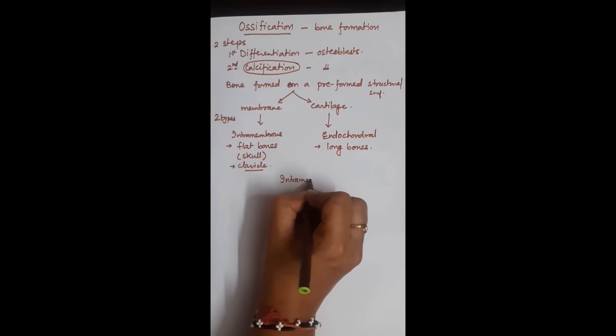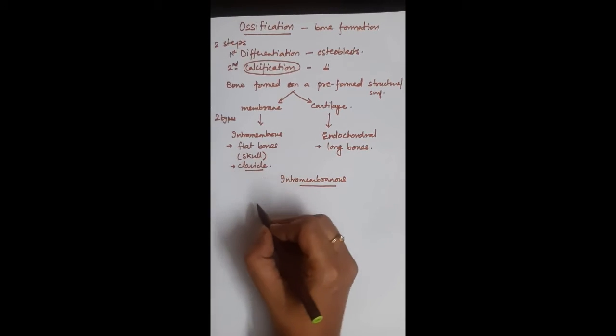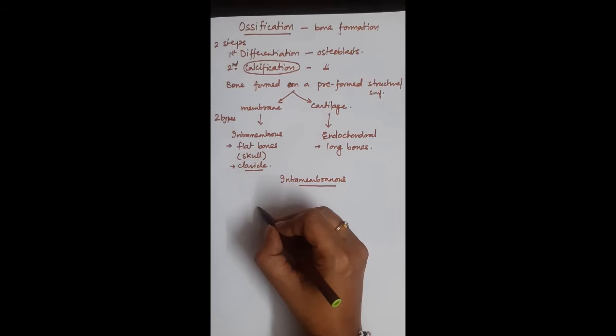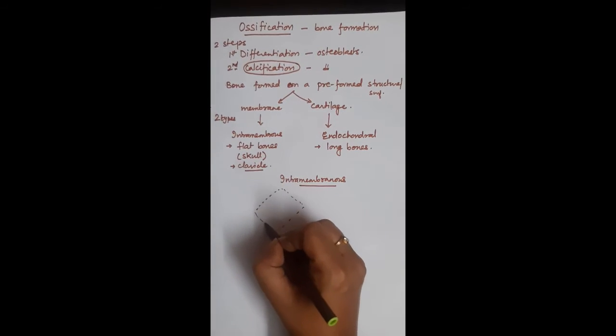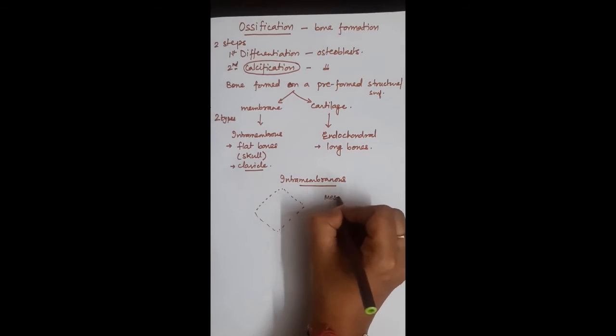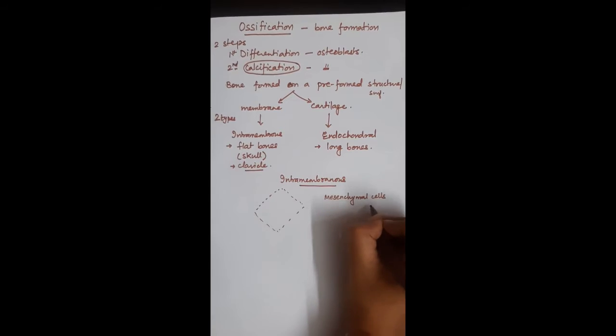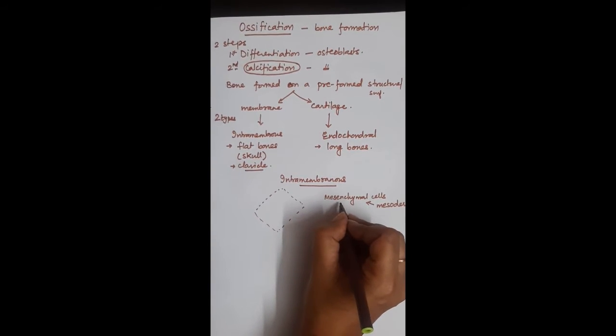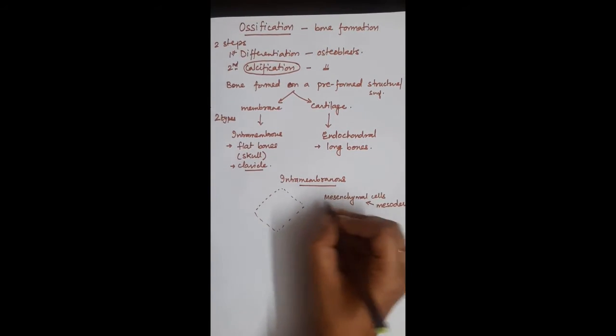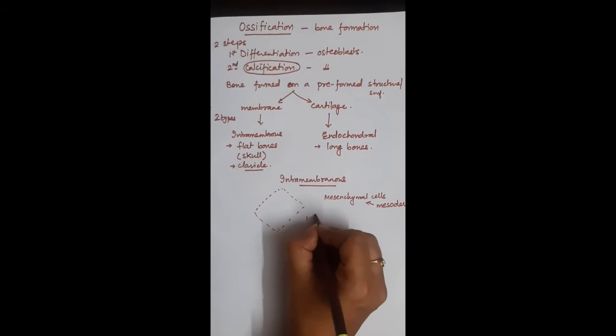Now let us see what is this intramembranous ossification. Imagine the skull bones where this bone has to develop. What happens: the mesenchymal cells, these mesenchymal cells are actually the pluripotent cells which are mesodermal in origin and which can give rise to connective tissue cells. So these mesenchymal cells organize themselves to form a fibrous membrane.